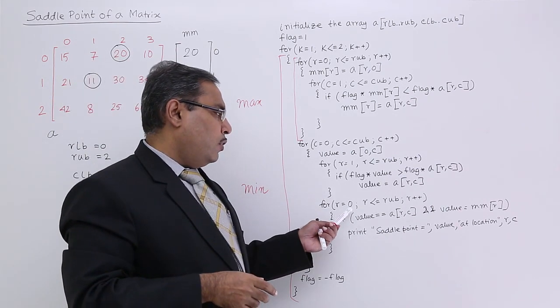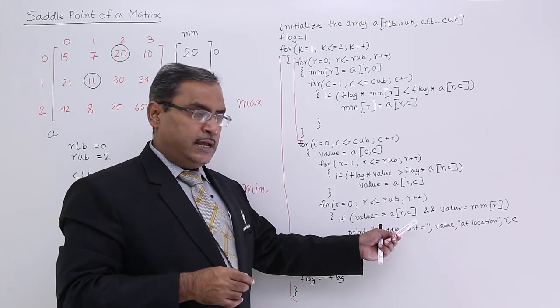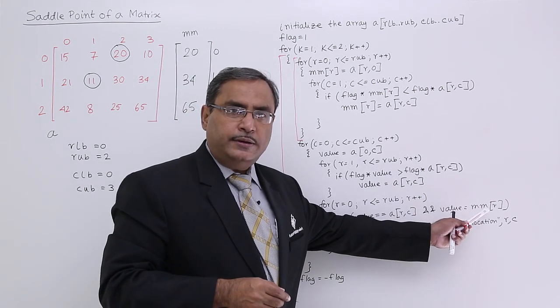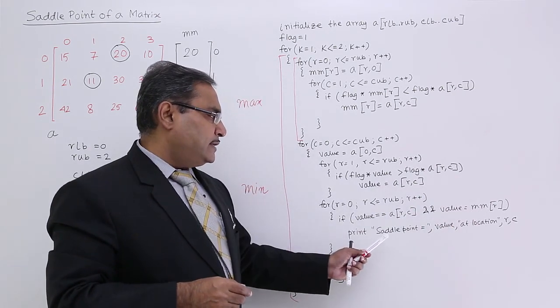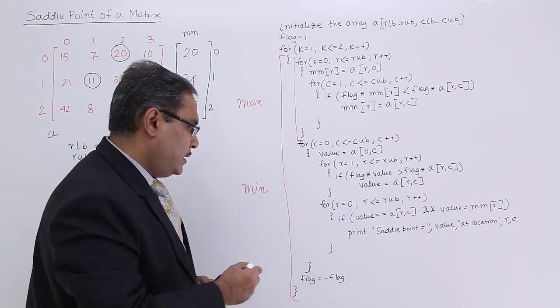Now for all rows, I am finding out whether this value is matching with this. At the same time, whether this value has been kept in mm array. If it is so, print saddle point is equal to value at location r c. I am getting printed.